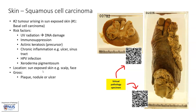Usually these tumors are located in sun-exposed skin, so the face is a common site. Grossly, they will appear as a plaque, a nodule, or an ulcerated mass, as you can see here. If you would like to access these interactive virtual pathology specimens, you can scan these QR codes to access them in our virtual pathology museum.